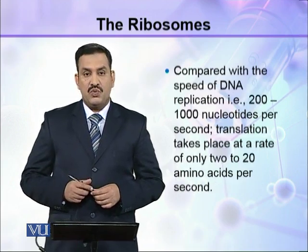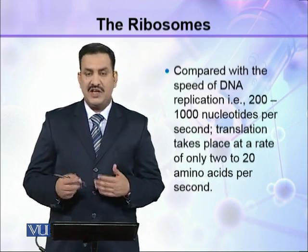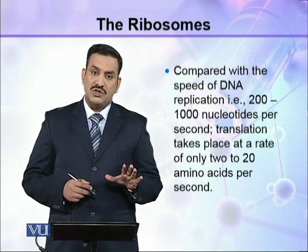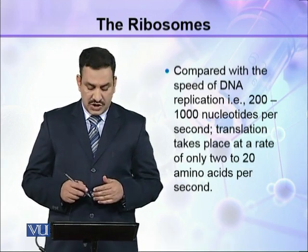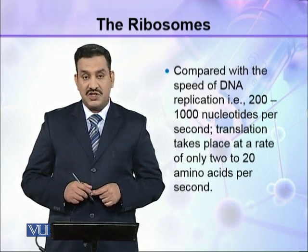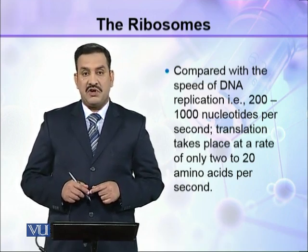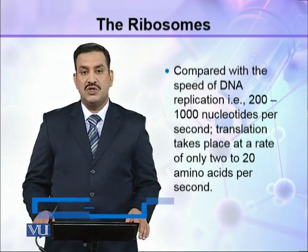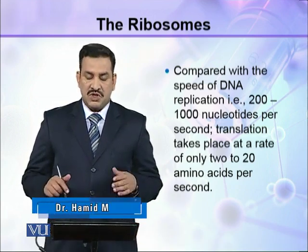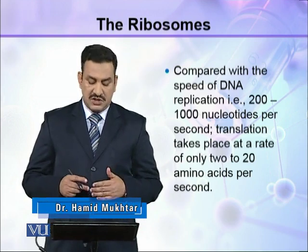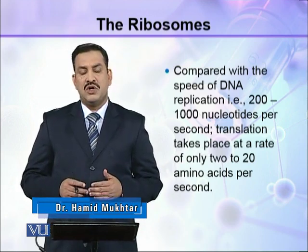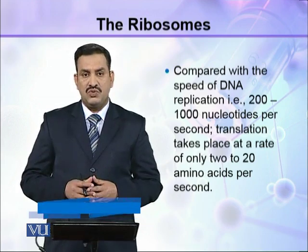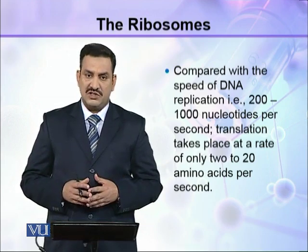Compared with the speed of DNA replication, which is about 200 to 1000 nucleotides per second, translation takes place at a rate of only 2 to 20 amino acids per second. This means DNA synthesis or DNA replication is very fast as compared to translation or protein synthesis.